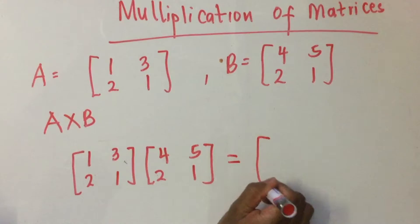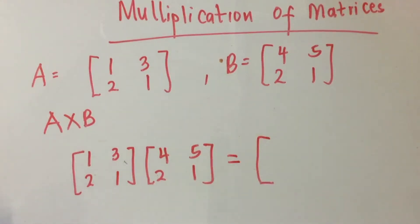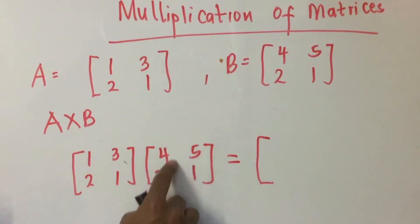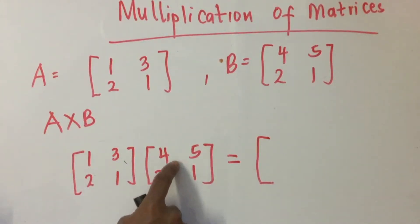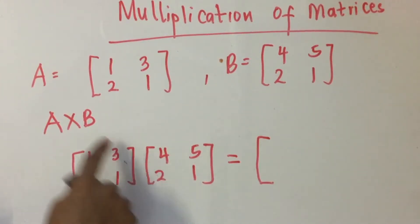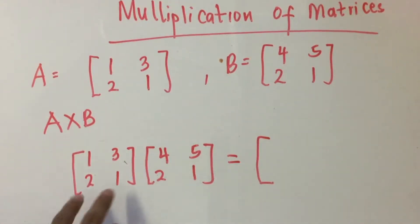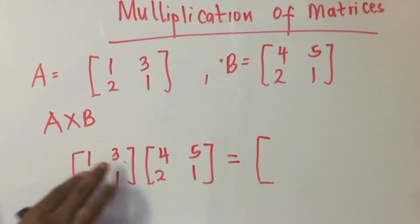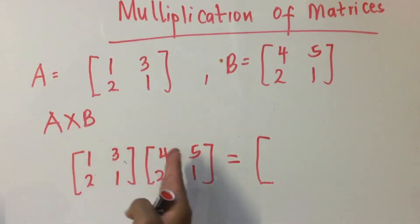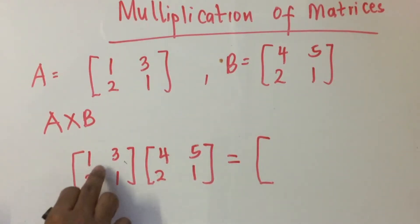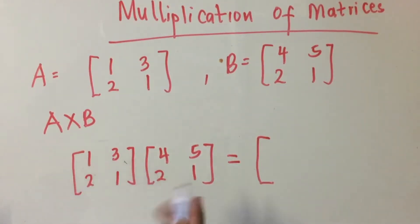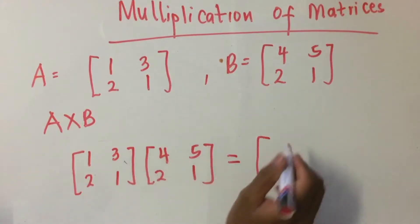The rows of matrix A multiplied by the columns of matrix B give the result matrix. For the first row and first column: 1 times 4,